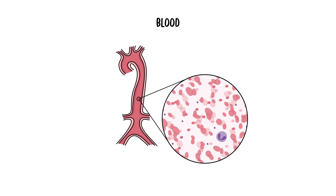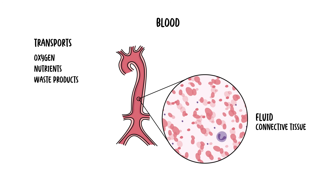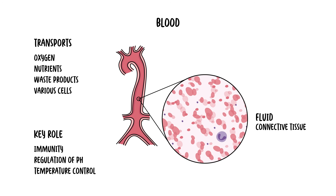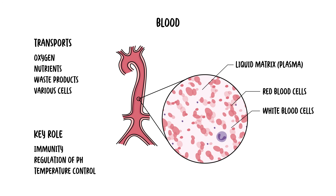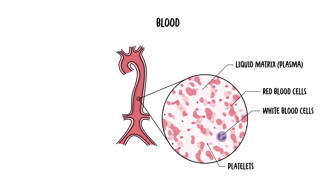The final type of specialized connective tissue is blood. Blood is a fluid connective tissue, unlike any other. It's tasked with the vital role of transportation within the body — transporting oxygen, nutrients, waste products, and various cells throughout the body, playing a key role in immunity, regulation of pH, and temperature control. Blood is composed of a liquid matrix called plasma, in which red blood cells, white blood cells, and platelets are suspended, allowing blood to perform a wide range of functions from delivery of oxygen to wound clotting and immune defense.